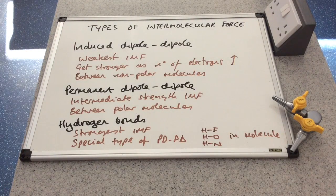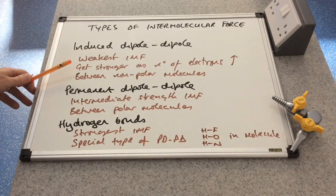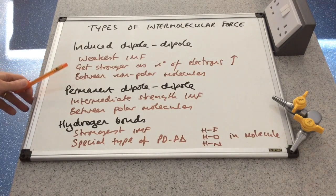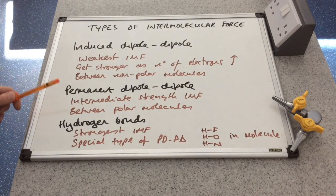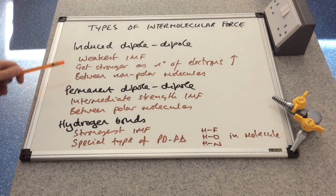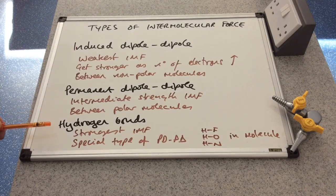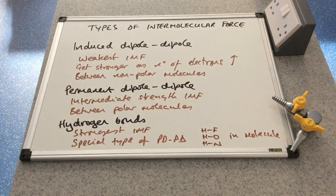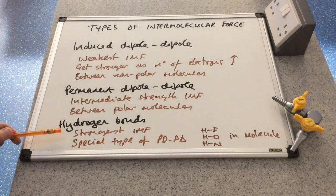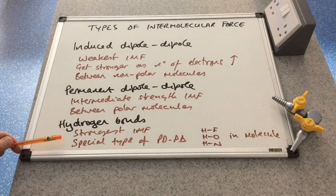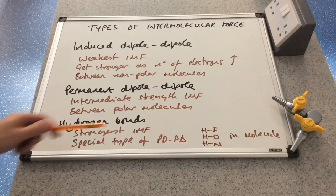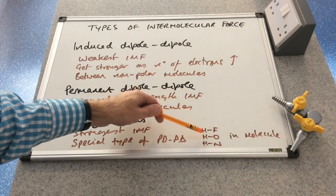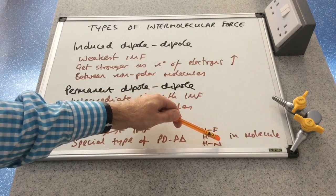To summarise: induced dipole-dipole interactions are the weakest intermolecular forces; they get stronger as the number of electrons in the molecules increases and exist between non-polar molecules. Permanent dipole-dipole interactions are intermediate strength — stronger than induced dipole-dipole but weaker than hydrogen bonds — and occur between polar molecules with permanent dipoles. Hydrogen bonds are the strongest of the three; they are a special type of permanent dipole-dipole force requiring a hydrogen directly bonded to a fluorine, an oxygen, or a nitrogen.